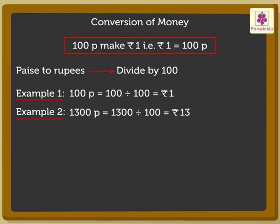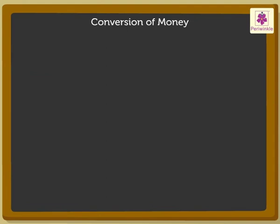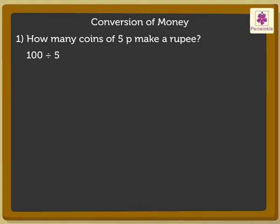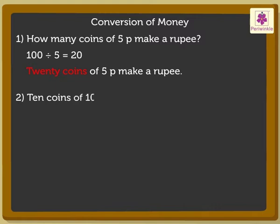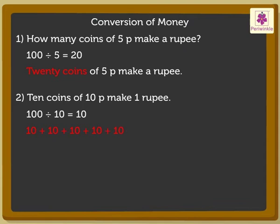Now, let's look at some examples showing different conversions. 1. How many coins of 5 paise make a rupee? 100 divided by 5 is equal to 20. So, 20 coins of 5 paise make a rupee. 2. Similarly, 10 coins of 10 paise make 1 rupee. 100 divided by 10 is equal to 10, so ten 10-paise coins add up to 100 paise.